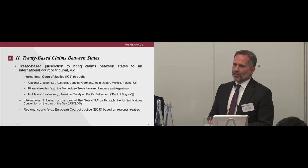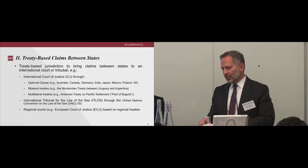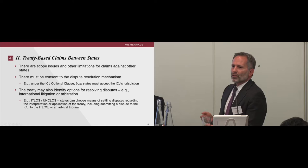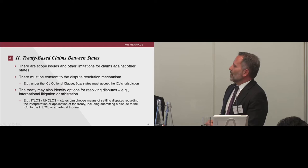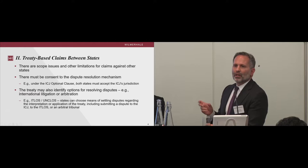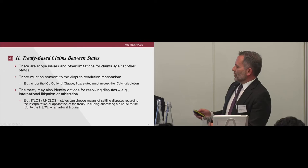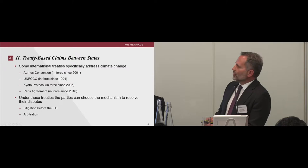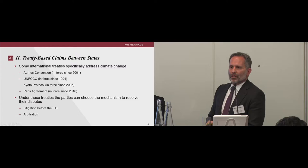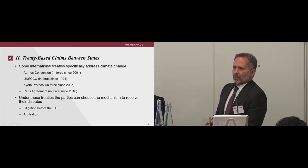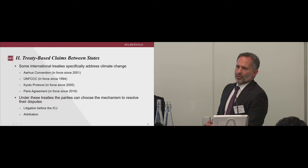There are also opportunities through regional courts like the European Court of Justice where states can bring claims potentially against other states. The issues when looking at treaty-based claims include scope — what sort of issues can be brought — and the primary limitation is consent. Under the optional clause for the ICJ, both states will have to agree to accept jurisdiction. Some treaties do provide choices between litigation in an international court or arbitration. The main climate change treaties do include dispute resolution mechanisms, generally allowing a choice between litigation at the ICJ or arbitration.